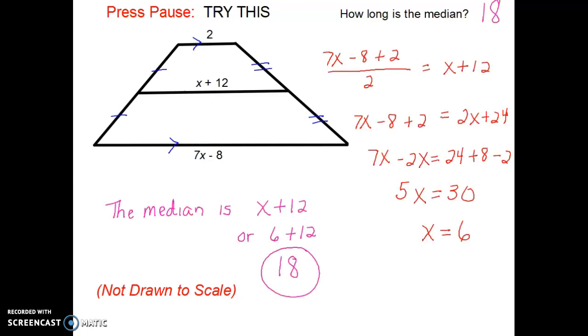On the right-hand side, this is where I averaged my bases together. And then I set it equal to the length of the median. When I do the algebra, I get a value of x equals 6.